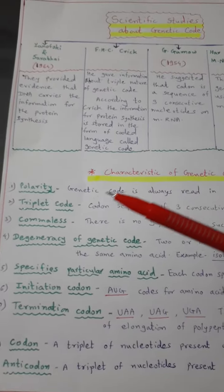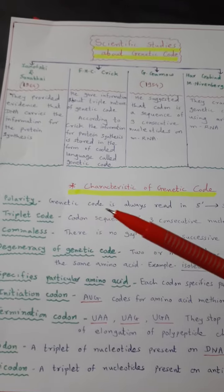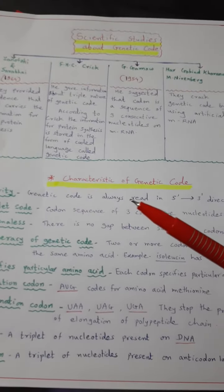Genetic code shows the following characteristics. The first is polarity. Genetic code is always read in the 5 prime to 3 prime direction.